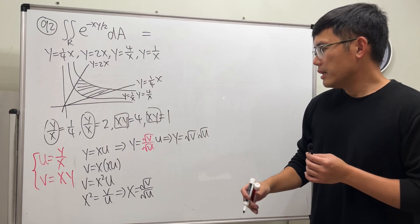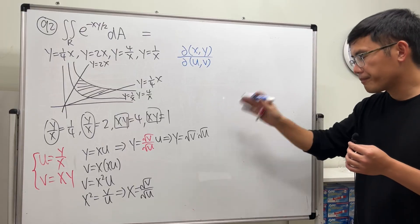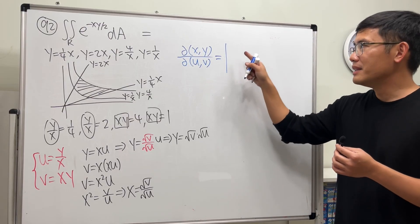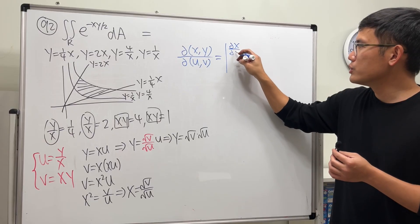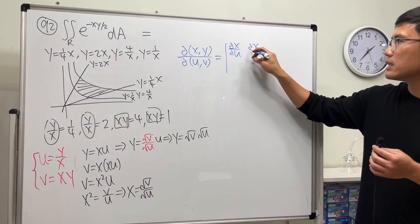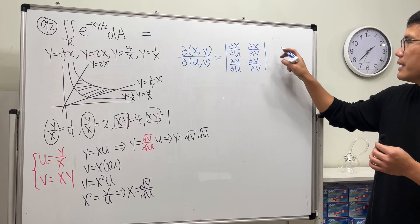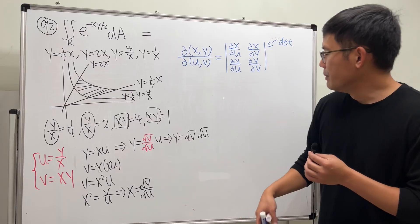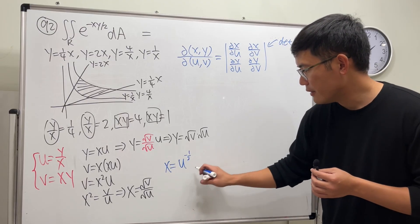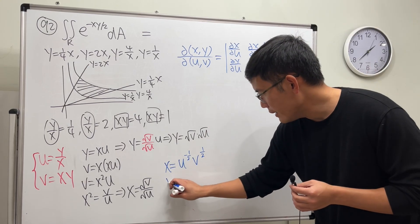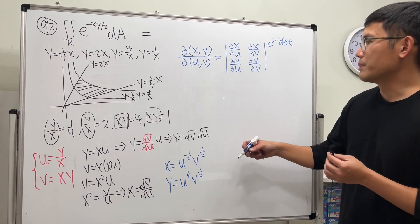Next, we need the Jacobian. We use determinant notation — note the bars here represent a determinant, not absolute value. The Jacobian is: ∂x/∂u, ∂x/∂v in the first row, and ∂y/∂u, ∂y/∂v in the second row. To differentiate more easily, I'll write x = u^(−1/2)·v^(1/2) and y = u^(1/2)·v^(1/2).